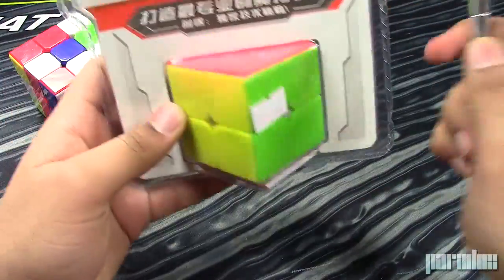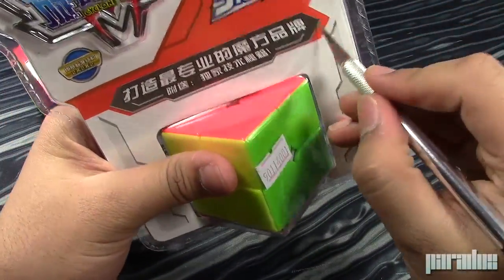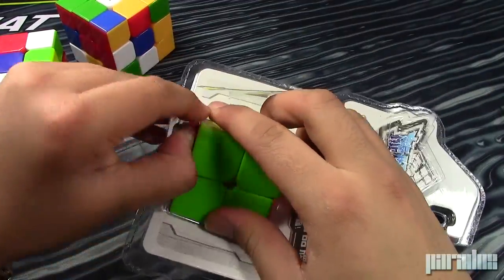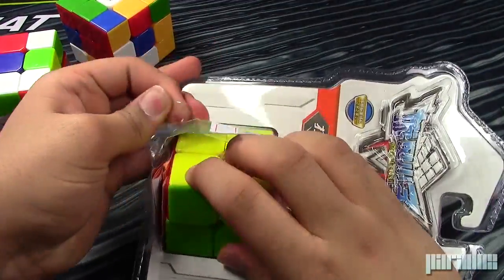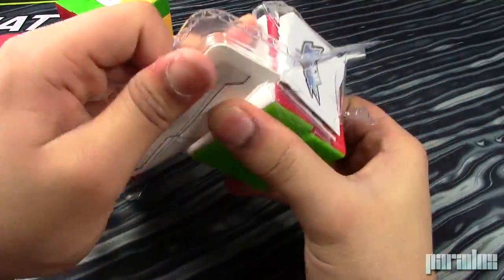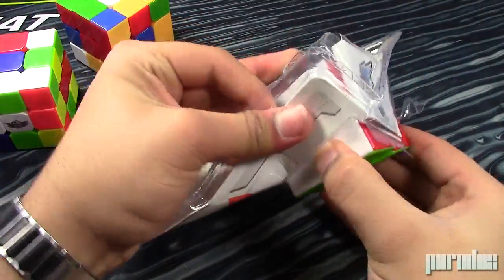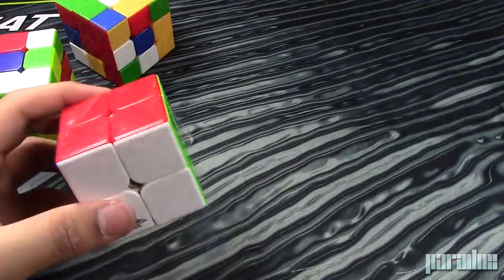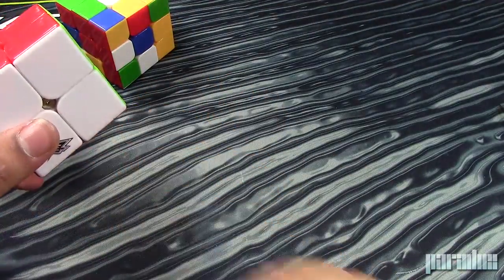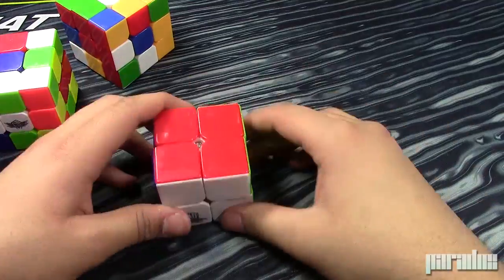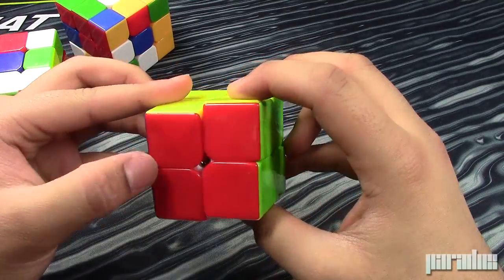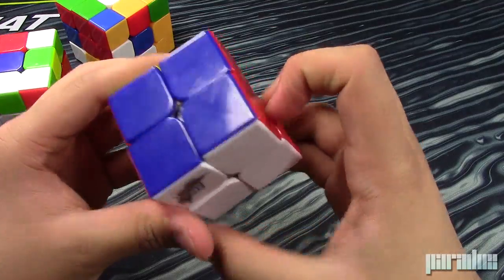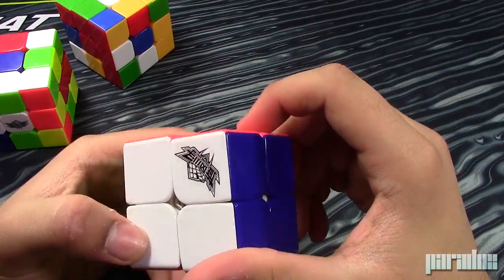That's the Cyclone Boys 3x3 and the YJ YuLong. Now moving on to the Cyclone Boys 2x2. Oh, this is the most annoying thing ever. Why can't they just make a box? I hate this so much. Finally got that out. Here it is. It's pretty, it looks kind of scratched up. Yeah, it has a lot of scratches on it. It's pretty dirty, but that doesn't make a difference. It's not bad.